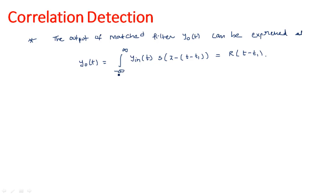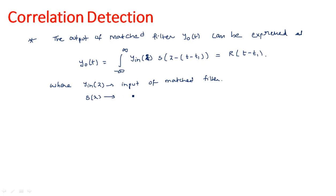This expression — integral from minus infinity to infinity of y_in(λ) — says that y_in(λ) is nothing but the input of the matched filter, and s(λ) is the received signal. So we can write this integral of y_in(λ) times s(λ minus something), and we can state this expression as: the output y_naught(t) is a correlation.